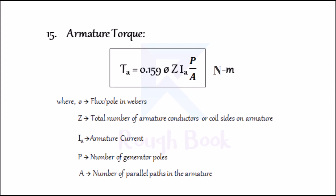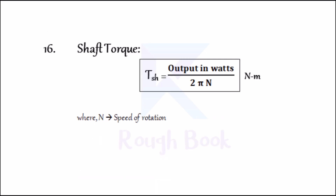Number fifteen: Armature torque. The equation is given by TA = 0.1595 × φ × Z × IA × (P / A) in Newton meters, where TA is the torque developed by a motor armature, φ is the flux per pole in Webers, Z is the total number of armature conductors or coil sides on armature, P is the number of generator poles, A is the number of parallel paths in the armature, and IA is the armature current. Number sixteen: Shaft torque. The torque which is available at the motor shaft for doing useful work is called shaft torque. The equation is given by TSH = output in watts / (2πN) in Newton meters, where N is the speed of rotation.